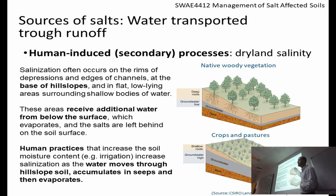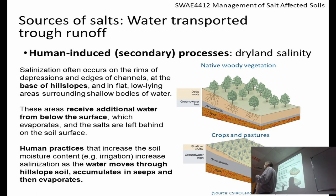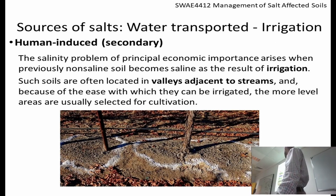If you change the vegetation — for example, if there is a forest and you chop it down — rainfall will bring salt and there will be accumulation of salt under different conditions. Dry land salinity is related to what happens if you manipulate the landscape in the wrong way. There is also water-transported or irrigation-related salinity, and in these cases we have different types of irrigation causing different patterns of salt distribution in the soil.